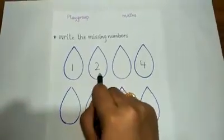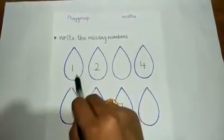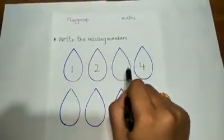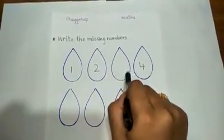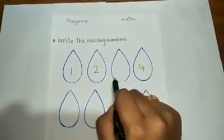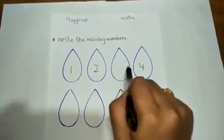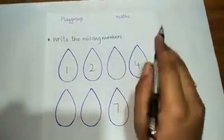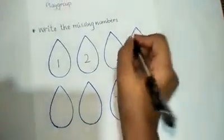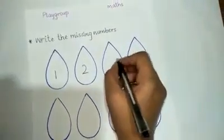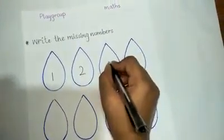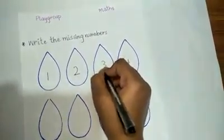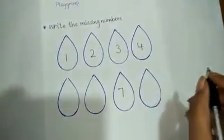So one, two — what comes after two? Which number is missing over here? Which number comes after two? Three! We are going to write number three.